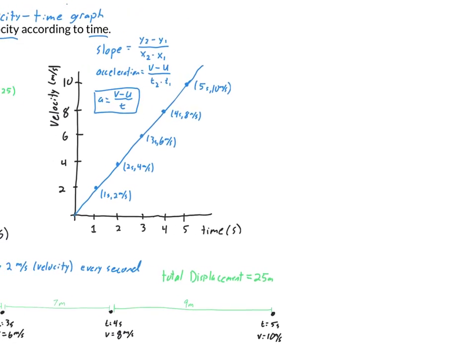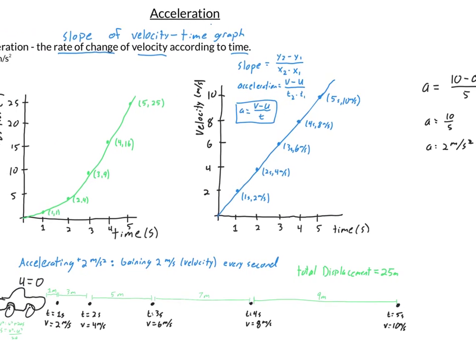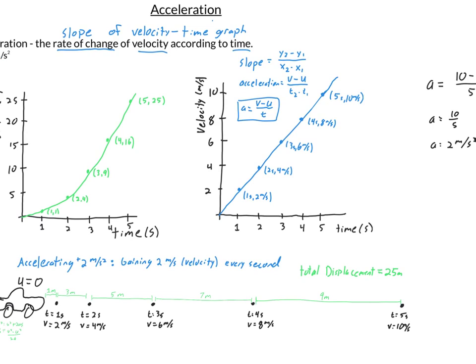Let's verify this equation. Our car was accelerating at 2 meters per second squared. Plugging in: a equals (10 minus 0) divided by 5 seconds, which gives a equals 10 divided by 5, equals 2 meters per second squared — exactly what we declared the car's acceleration to be.